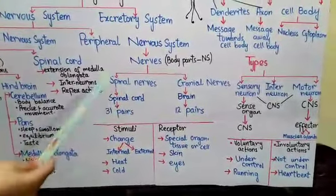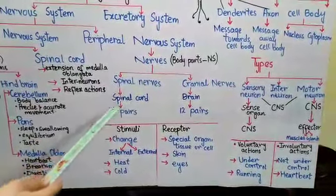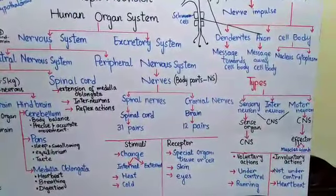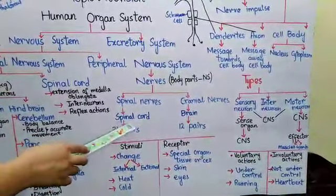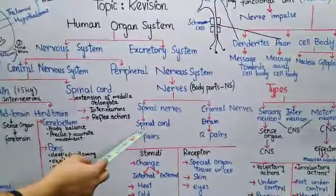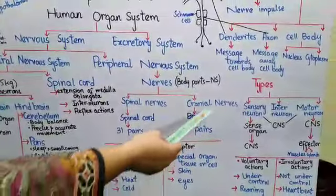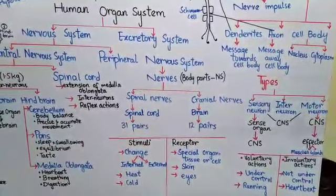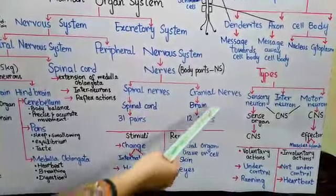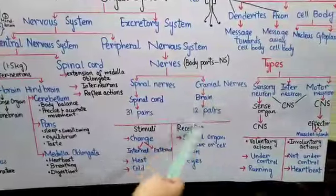Spinal nerves arise from the spinal cord, and the nerves that arise from the brain are called cranial nerves. There are 31 pairs of spinal nerves and 12 pairs of cranial nerves. This is important from the MCQ's point of view.